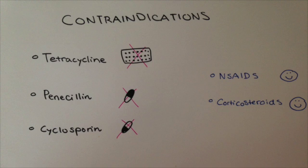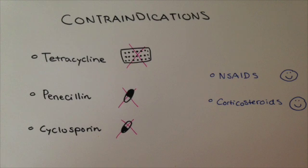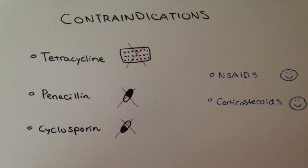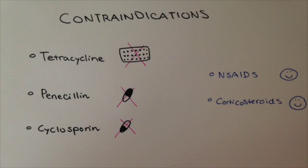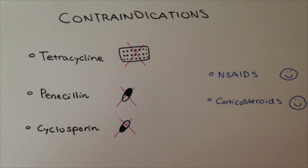What are some contraindications with the use of methotrexate? Tetracycline and the oral contraceptive pill have both been shown to increase the bioavailability of methotrexate and have thus been contraindicated. Penicillins and cyclosporins can also lower the renal elimination of methotrexate and thus have been contraindicated. Methotrexate is also contraindicated in patients with renal failure, as this impedes the ability to clear the drug.